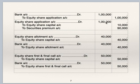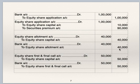Equity share application account debit Rs 1 lakh — to equity share capital Rs 10,000 and to securities premium Rs 90,000, since Rs 1 goes to capital and Rs 9 to securities premium (10,000 × Rs 1 and 10,000 × Rs 9). Next, allotment money due: equity share allotment account debit to equity share capital Rs 40,000 (10,000 × Rs 4). Bank account debit to equity share allotment Rs 40,000. Equity share first and final call due: equity share first and final call account debit to equity share capital Rs 50,000 (10,000 × Rs 5). Bank to equity share first and final call.